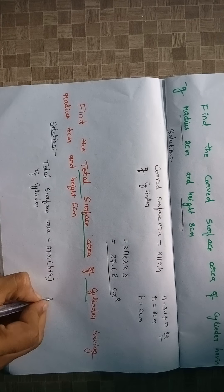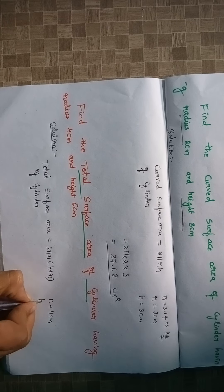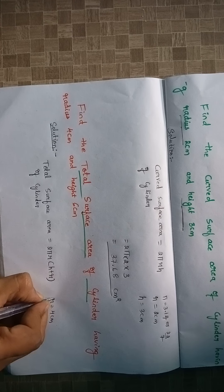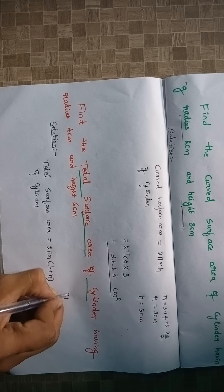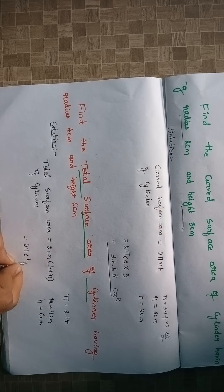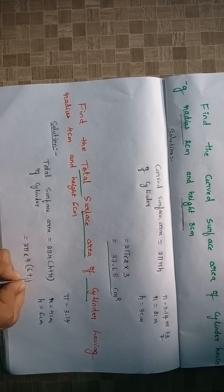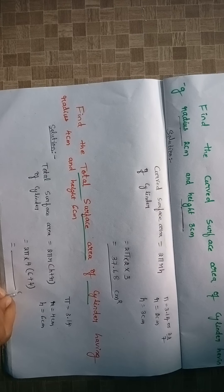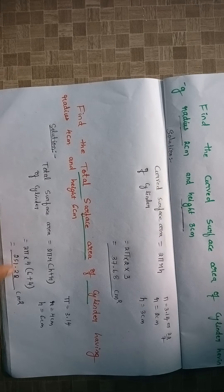Radius is 4 centimeters and height is 6 centimeters. The value of π is 3.14. Substituting: 2π into 4 into (6 + 4). The total surface area of the cylinder is 151.22 centimeters squared. Thank you for watching this video — share with your friends and subscribe to our channel for future updates.